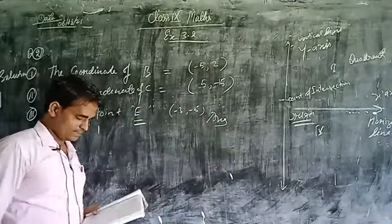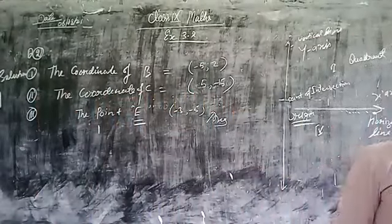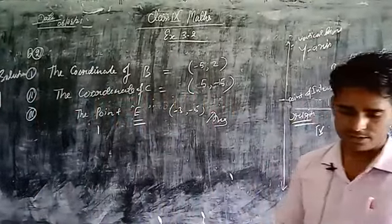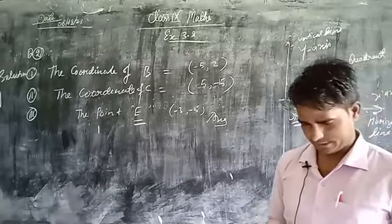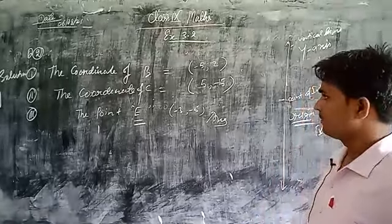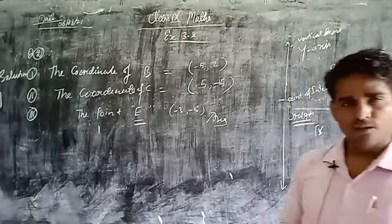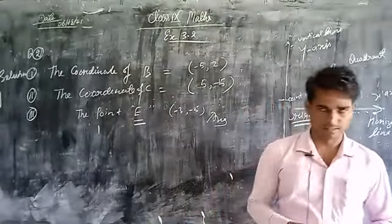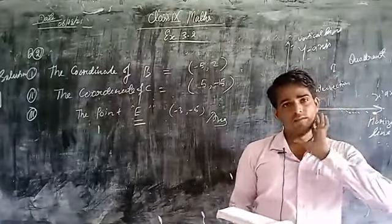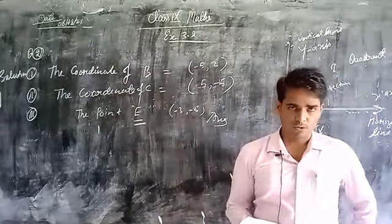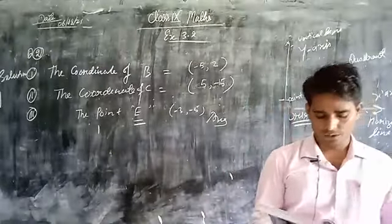Similarly, you can find out the coordinates of different points given in the remaining questions such as 4, 6, 7, and 8. I hope you will be able to find the position of points in the Cartesian plane and write the answers. We will continue the chapter tomorrow. Thank you.